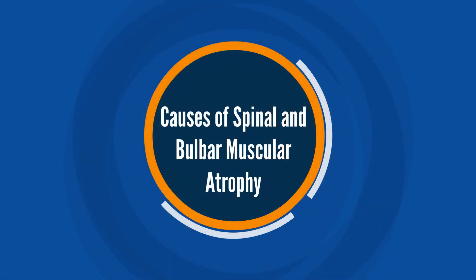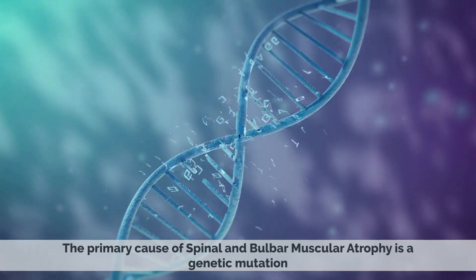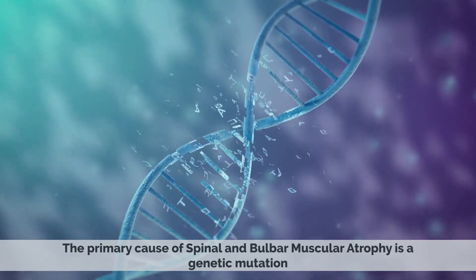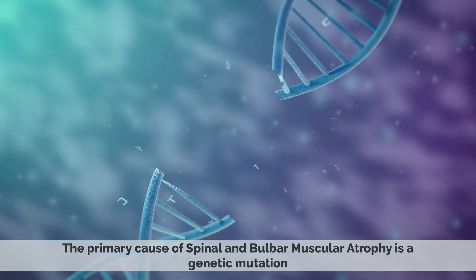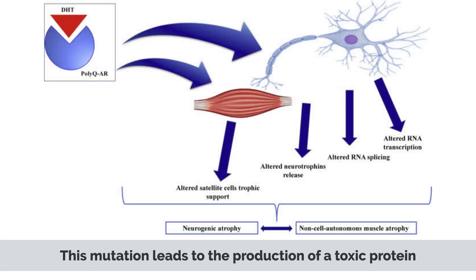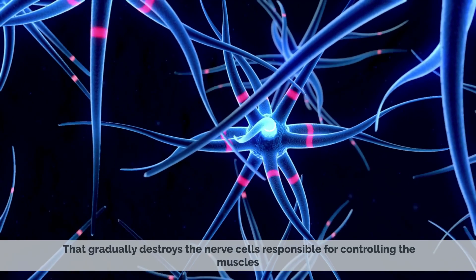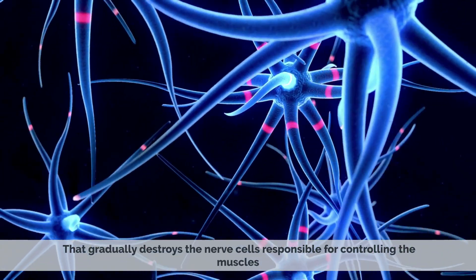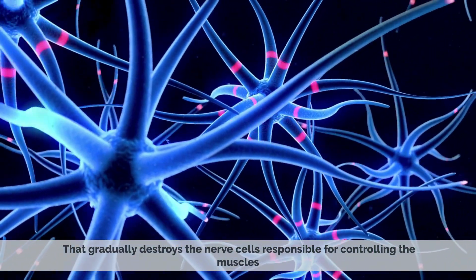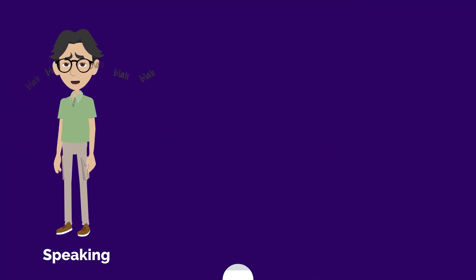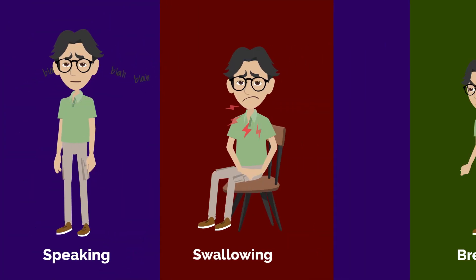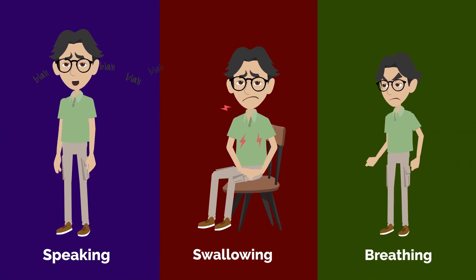The primary cause of Spinal and Bulbar Muscular Atrophy is a genetic mutation. This mutation leads to the production of a toxic protein that gradually destroys the nerve cells responsible for controlling the muscles. The result is muscle weakness, wasting, and twitching, which can eventually lead to difficulty speaking, swallowing, and breathing.